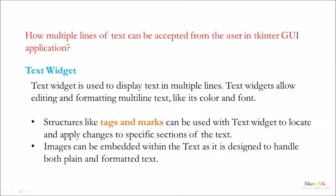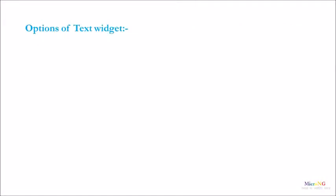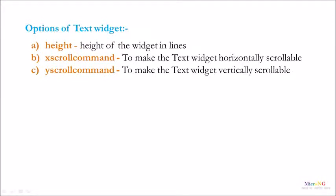Images can be embedded within the text, as it is designed to handle both plain and formatted text. The important options of the Text widget are: height, x-scroll command, and y-scroll command. The height is used to specify the height of the widget in number of lines. The x-scroll command makes the Text widget horizontally scrollable, and the y-scroll command makes the Text widget vertically scrollable.